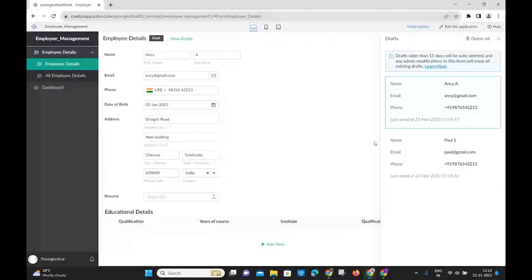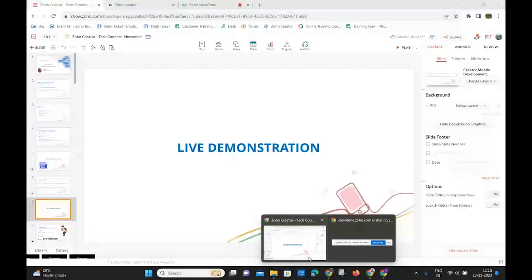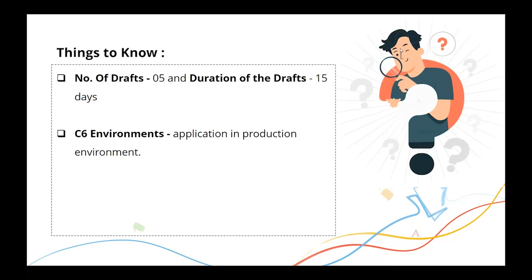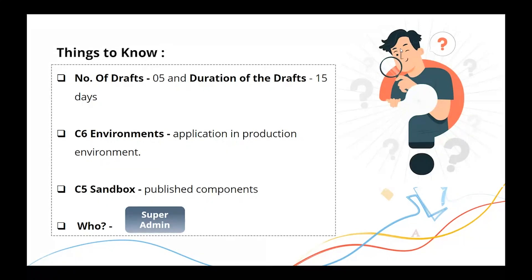Key points for Form Save as Draft: the duration is 15 days, and you can save up to five drafts per form. Regarding environments, the feature is only applicable in the production environment — not in staging or development. For C5 version sandbox customers, only published components can access Save Form as Draft. The super admin, admin, and developer roles can enable this option for users.